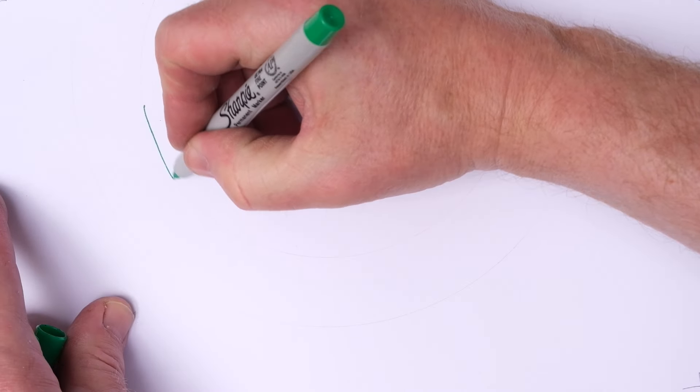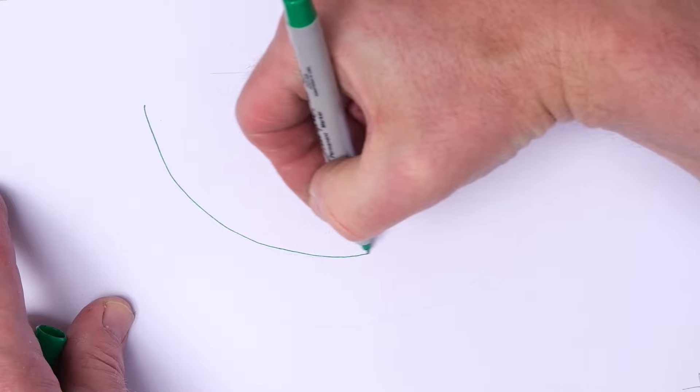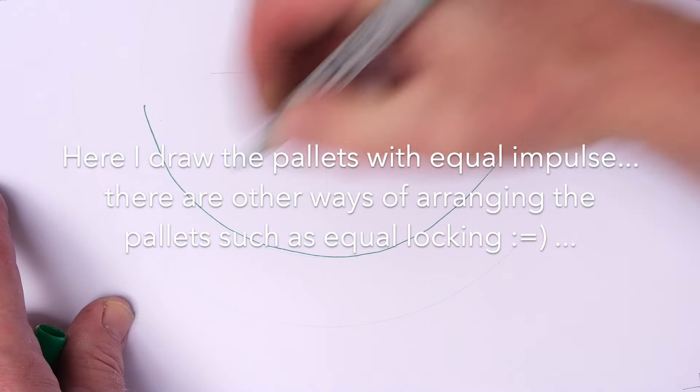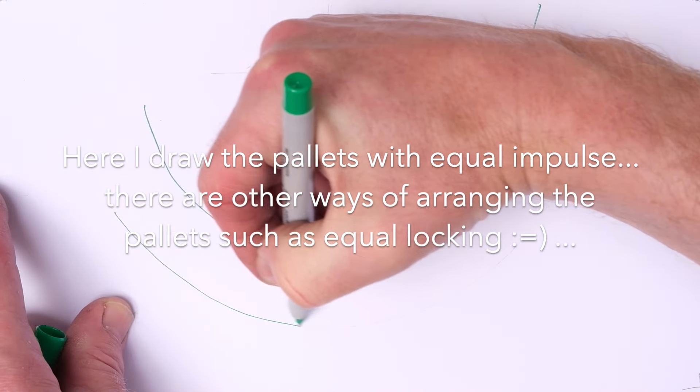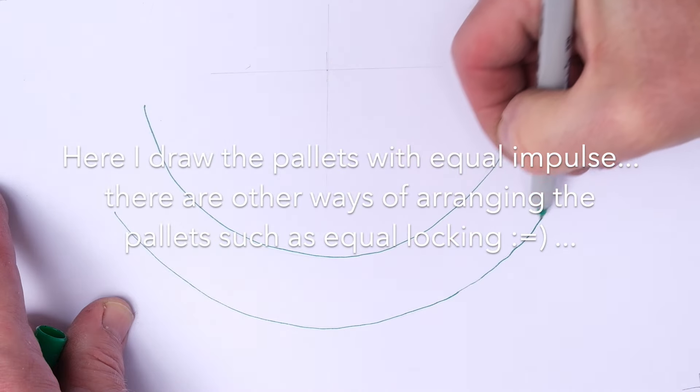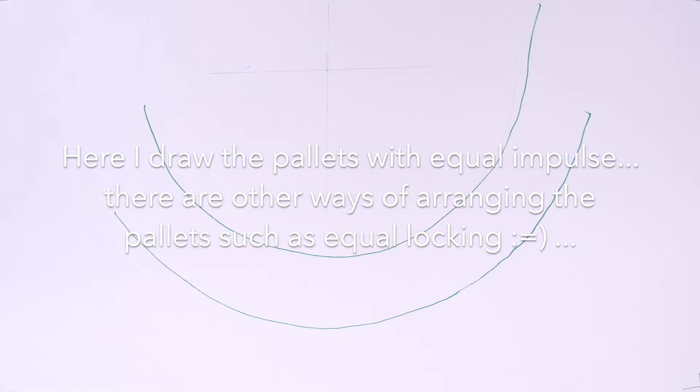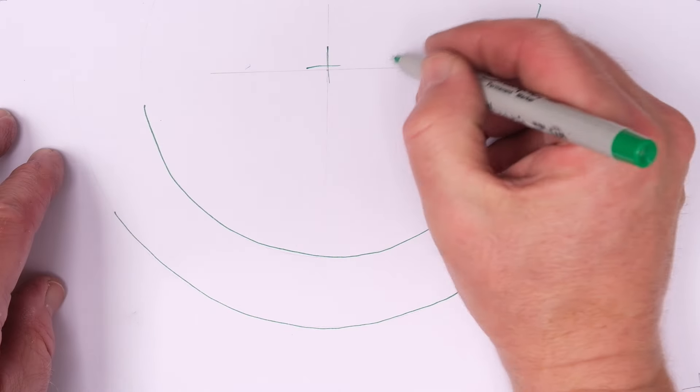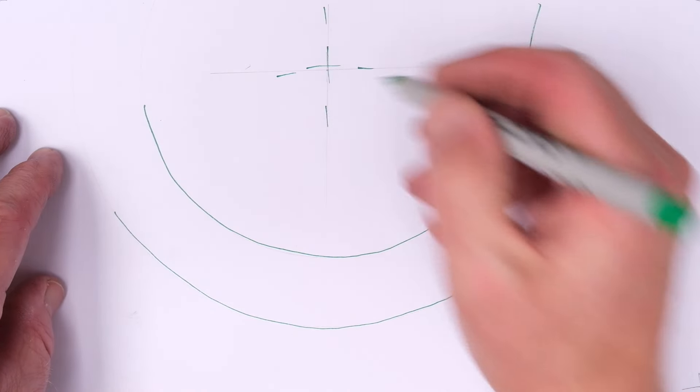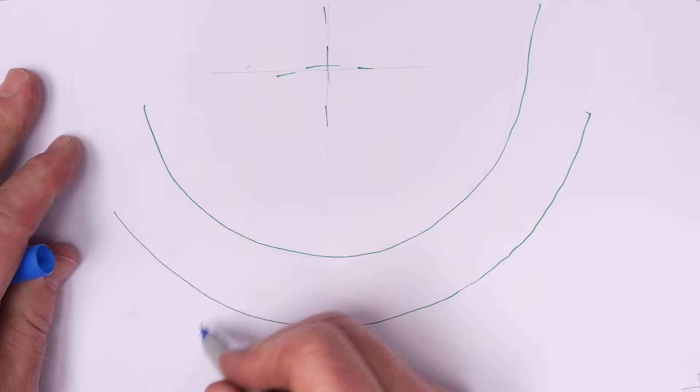So the deadbeat escapement gets its name from these two faces which are a constant radius from the pallet arbor. They're sometimes called the resting surface or face, sometimes called the dead face or sometimes called the locking face. Whatever you call them it doesn't matter, the point is that they are a constant radius from the pallet arbor.